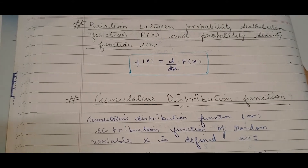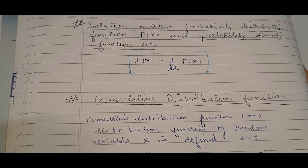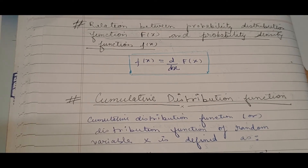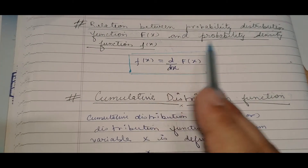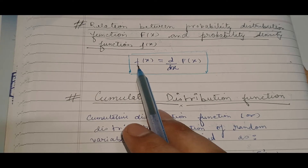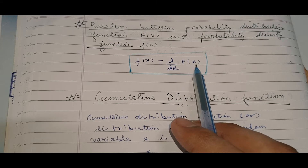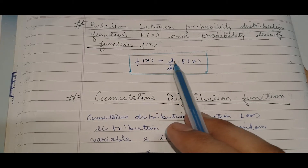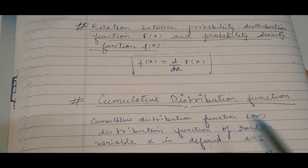Welcome back. Today we will see two most important concepts: the relation between the probability distribution function capital F(x), and the probability density function small f(x). The formula is: small f(x) equals the differentiation of capital F(x), that is, the probability density function equals the differentiation of the probability distribution function.